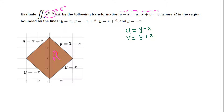Now we need to convert this region in the xy-plane into the uv-plane using these change of variables. Looking closely at the region, the corners are: (0,0), (1,1), (0,2) at the top, and (−1,1) on the left. We have two options to convert this region — working with the line equations or using the four corner coordinates.